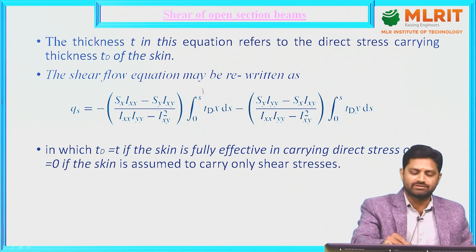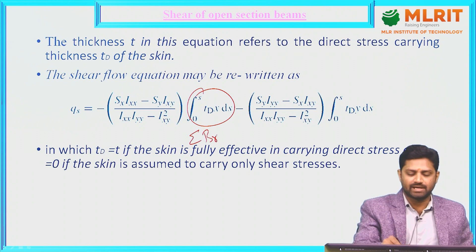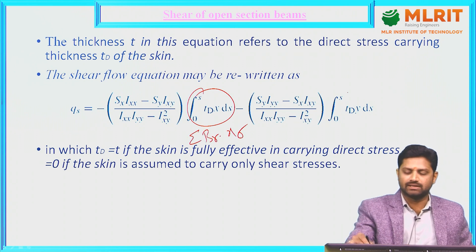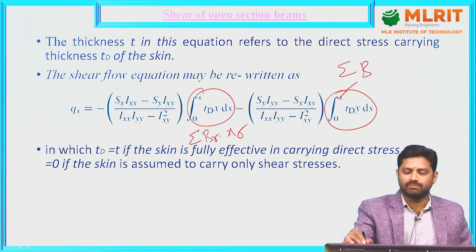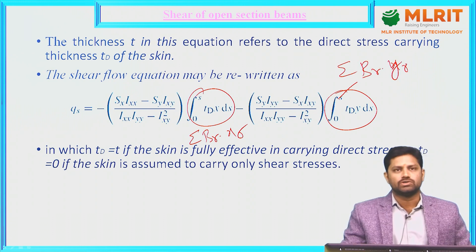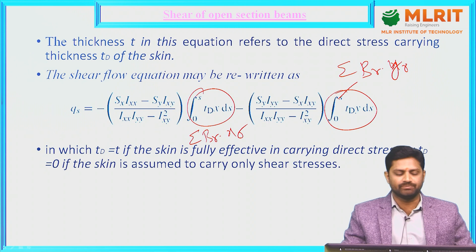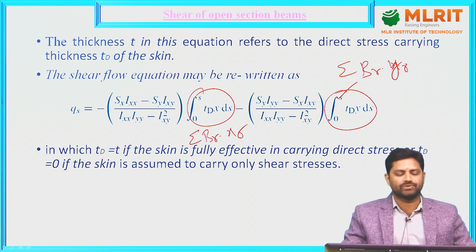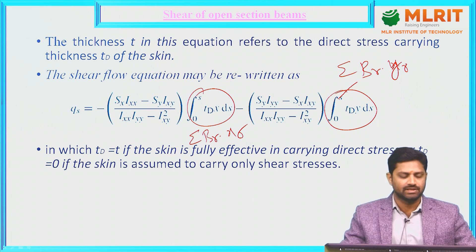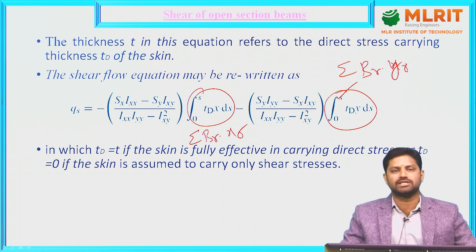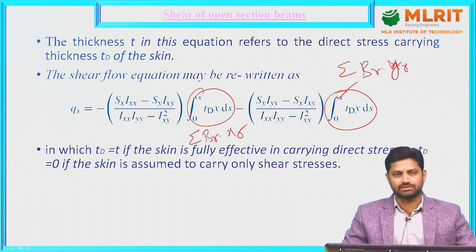Since we are encountering booms, the integral will be replaced by summation Br·xr, and the other integral will be replaced by summation Br·yr. This is the shear flow distribution, in which Td equals T if the skin is fully effective in carrying direct stresses, or T equals 0 if the skin is assumed to carry only shear stresses.